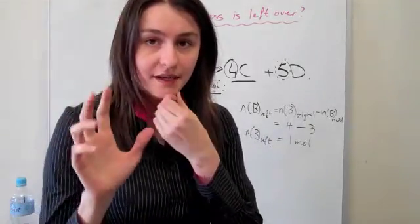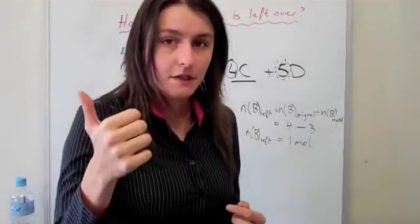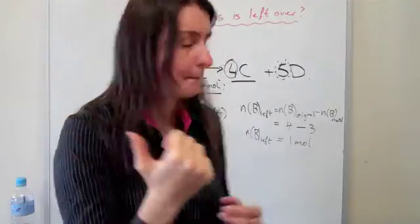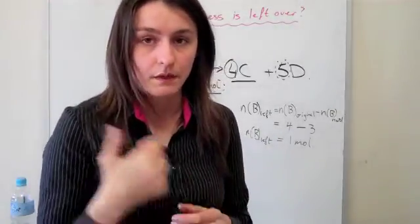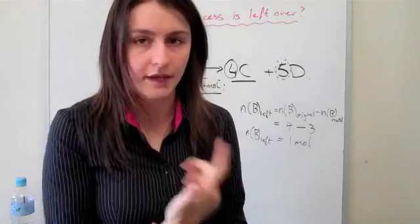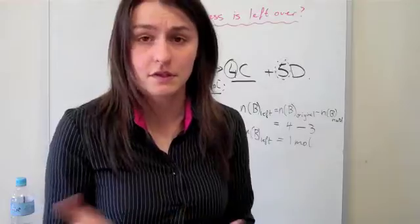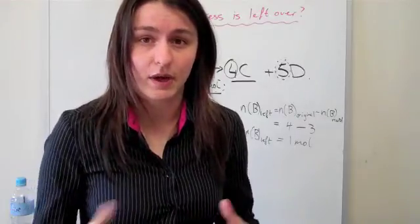Just in three steps, basically what you have to do is: first, use the limited to find how much of the excess actually reacted with it. Second, you have to get the original mole of the excess. And third, you subtract the two and get the difference, which gives you your excess or how much is left over.